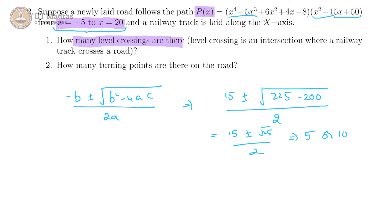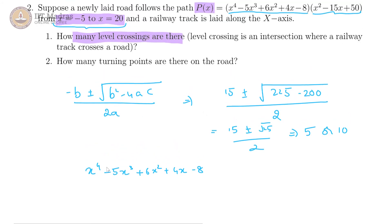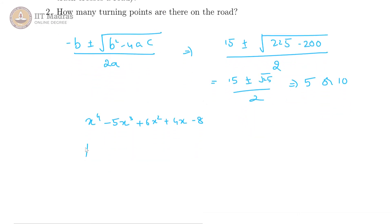Now we look at the other part, the quartic part. Here we have x⁴ minus 5x³ plus 6x² plus 4x minus 8. In these situations what is typically suggested is that we do a little bit of trial and error — we try out basic small integers to see if we can find any roots at all. Let us start with p(0): p(0) is minus 8, which is clearly not equal to 0, so 0 is not a root.